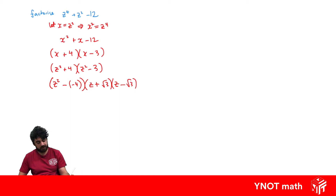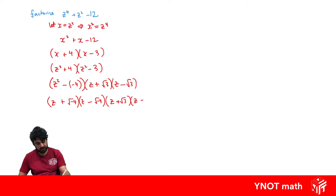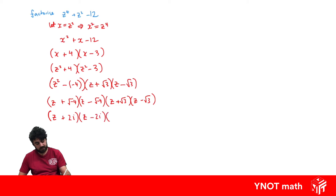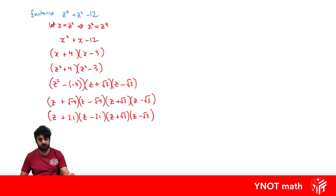We can do the same thing with our first bracket. For z squared plus 4, the square root of minus 4 is 2i. So we get z plus 2i times z minus 2i. Combined with the other factors, our complete factorization over the complex numbers is z plus 2i, times z minus 2i, times z plus root 3, times z minus root 3.